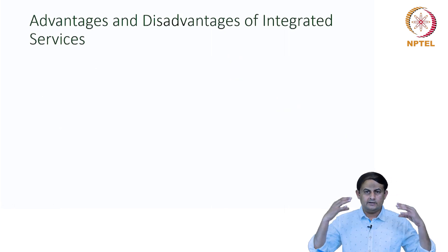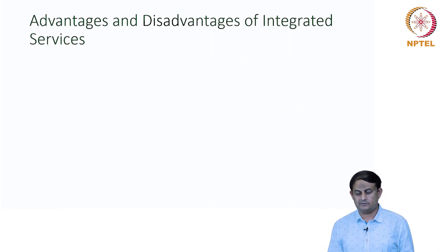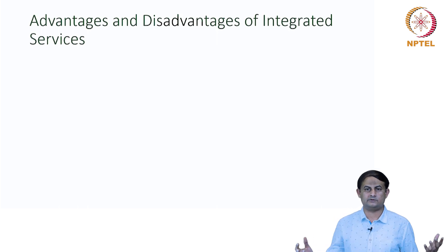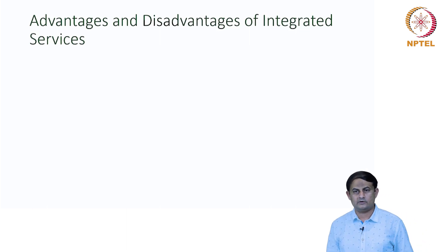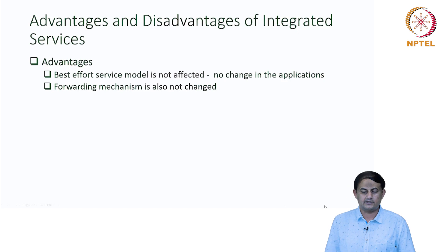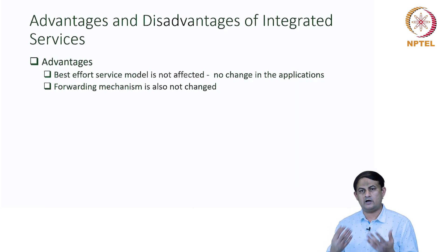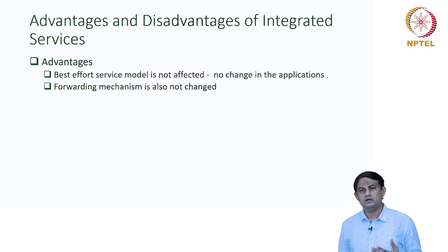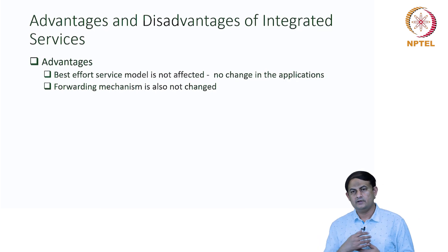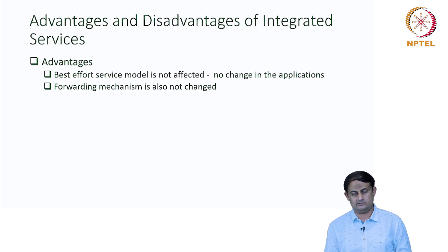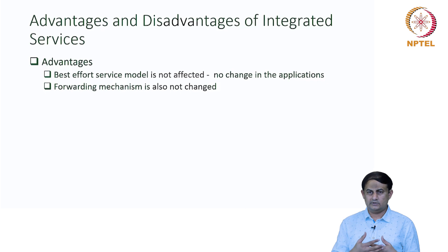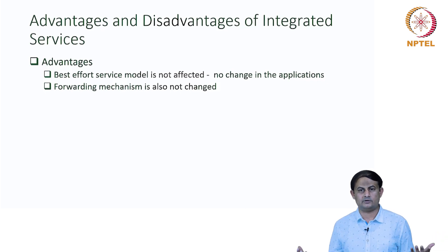With that background, the integrated service model primarily uses RSVP as a signaling protocol to reserve resources for different transmissions. The advantage of the integrated service model is that one of its services — best effort service — is exactly the same as the default IP model of TCP/IP. No changes are required to the router to provide this service on top of TCP/IP.